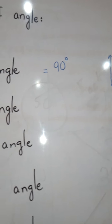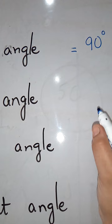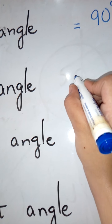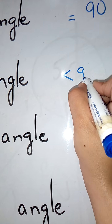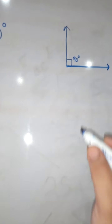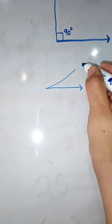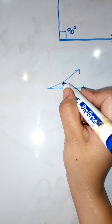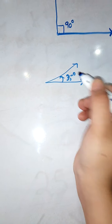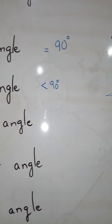The next type is the acute angle. An acute angle is always less than 90 degrees. Its opening is narrow, and the rotation is less than 90 degrees — for example, 35 degrees or 45 degrees. It is always less than 90 degrees.